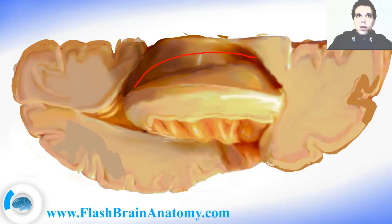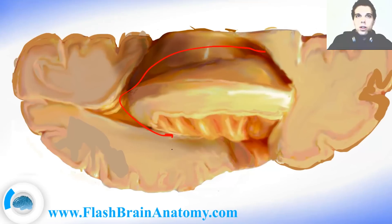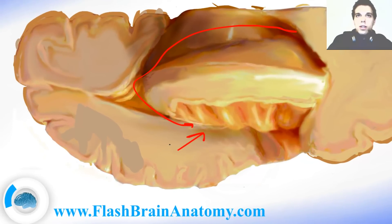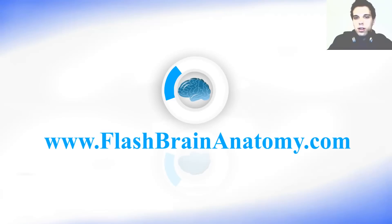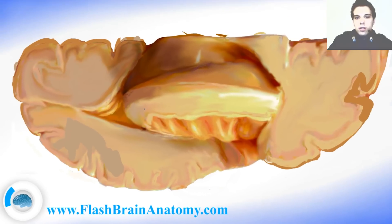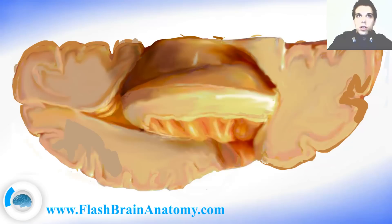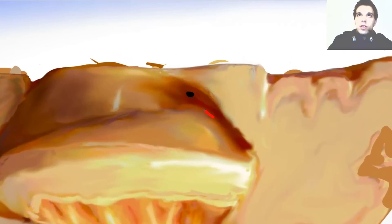If we go all the way down under the insula we would be able to see the inferior horn of the lateral ventricle. This is the collateral trigonum. I talked about these two horns in the last two videos. Now we can go back to learn more about the other two parts of the lateral ventricle: the cellamedia and the anterior horn. This is the foramen of Monroe.